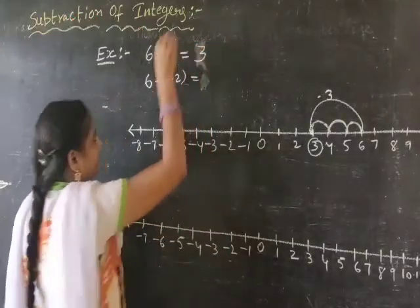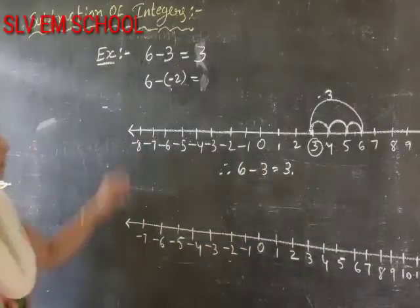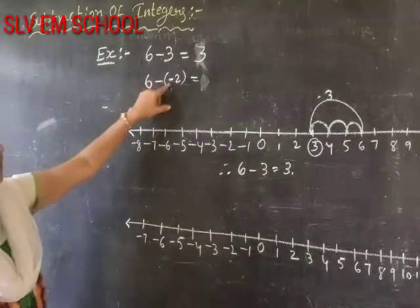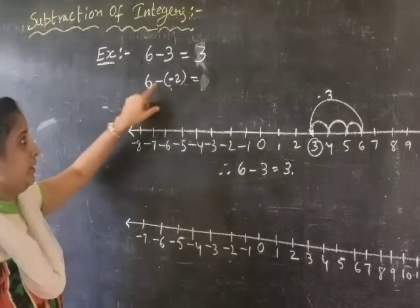Let's go into another example: 6 minus minus 2. Here minus 2 is the negative integer. 6 is the positive integer.